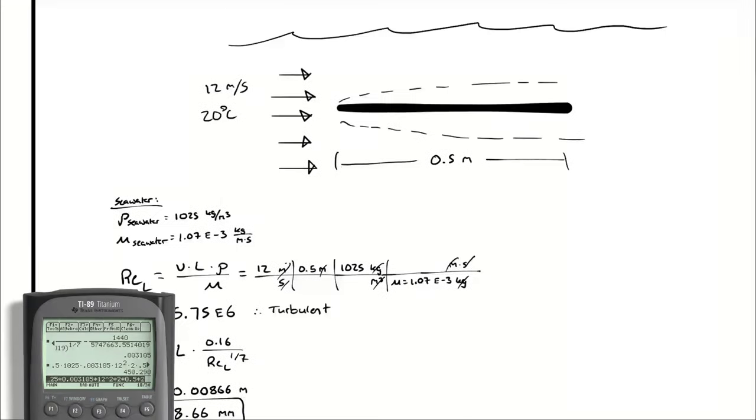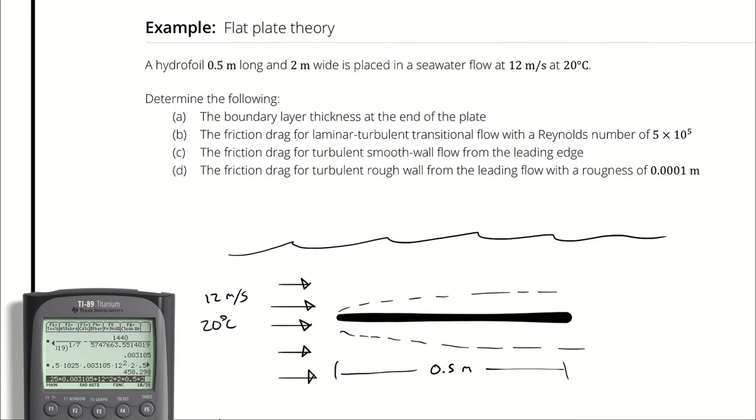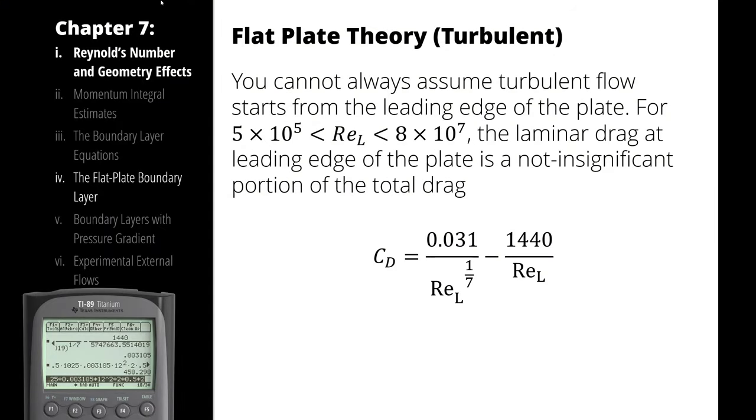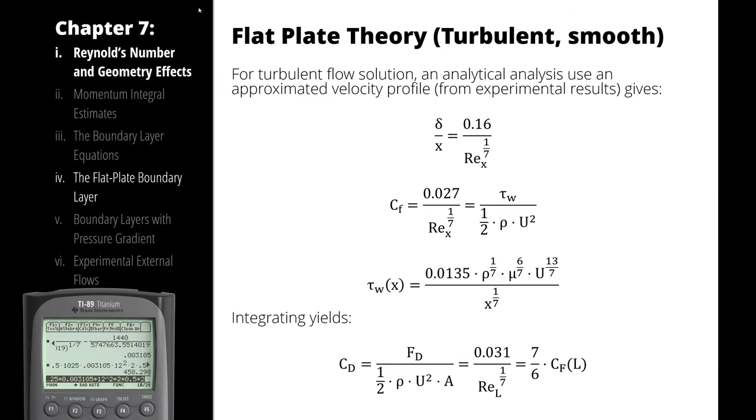For part C, I want us to determine what the drag force would be if the coefficient of drag were generated using the assumption that it was smooth turbulent flow across the entire plate as opposed to laminar at the beginning of the plate and turbulent at the end of the plate. So, the only difference between B and C is that coefficient of drag is calculated using this equation.